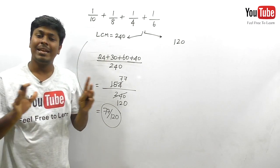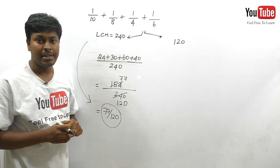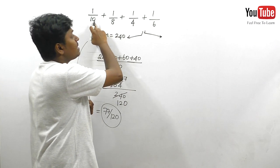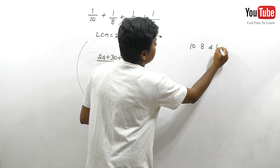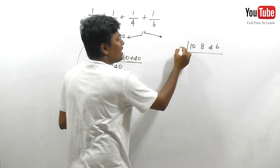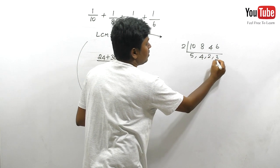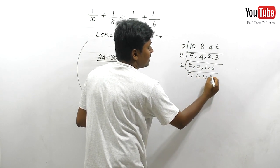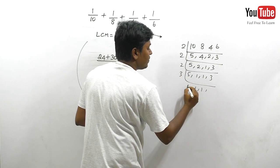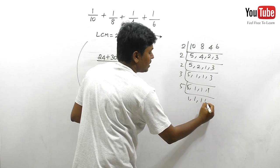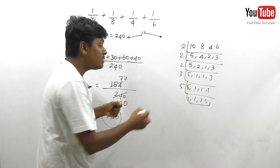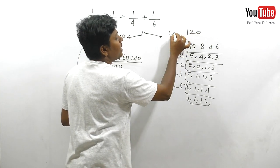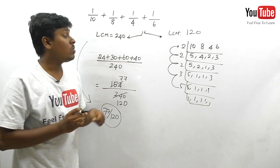This is our shortcut methodology and we finally got 77/120. Now let me do the traditional method for 10, 8, 4, and 6. Divide by 2: 5, 4, 2, 3. Divide by 2 again: 5, 2, 1, 3. Divide by 2 again: 5, 1, 1, 3. Divide by 5: 1, 1, 1, 3. Wait — dividing by 3: gives 1, 1, 1, 1. So LCM = 5 × 3 × 2 × 2 × 2 = 120.